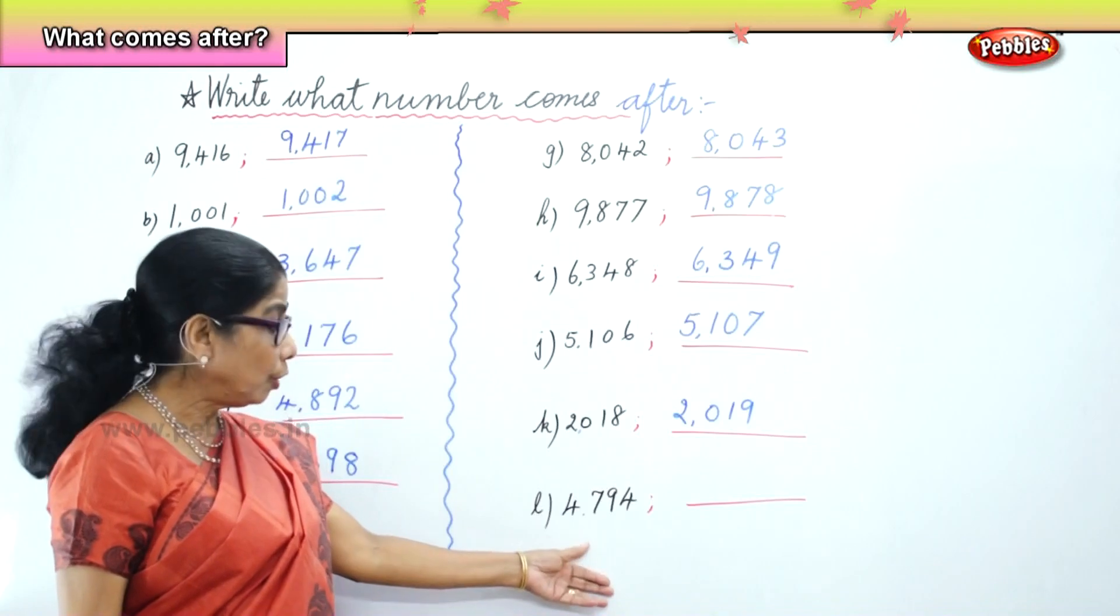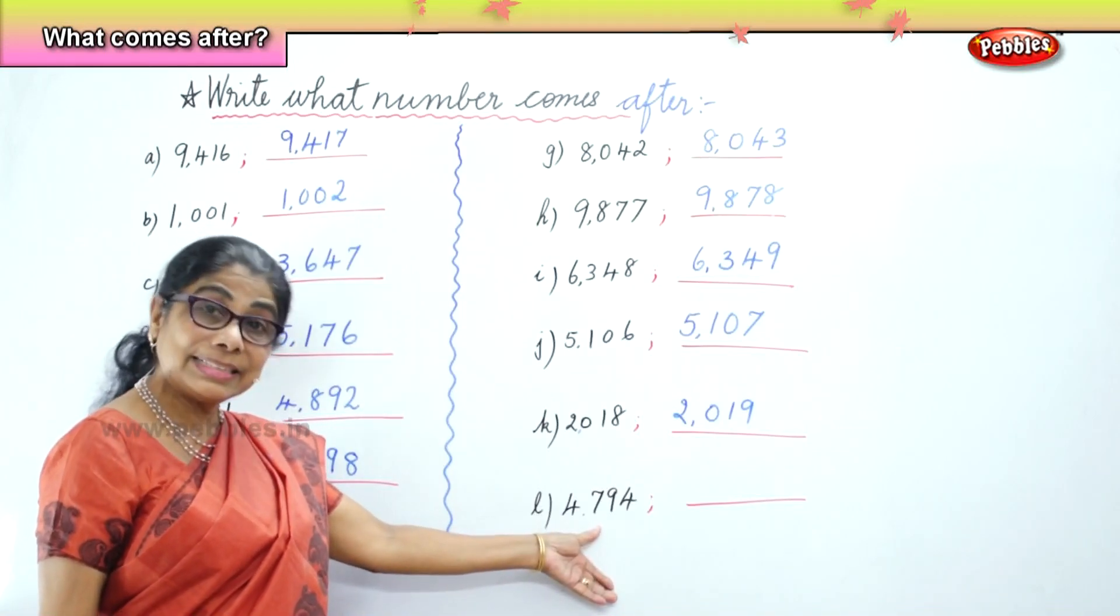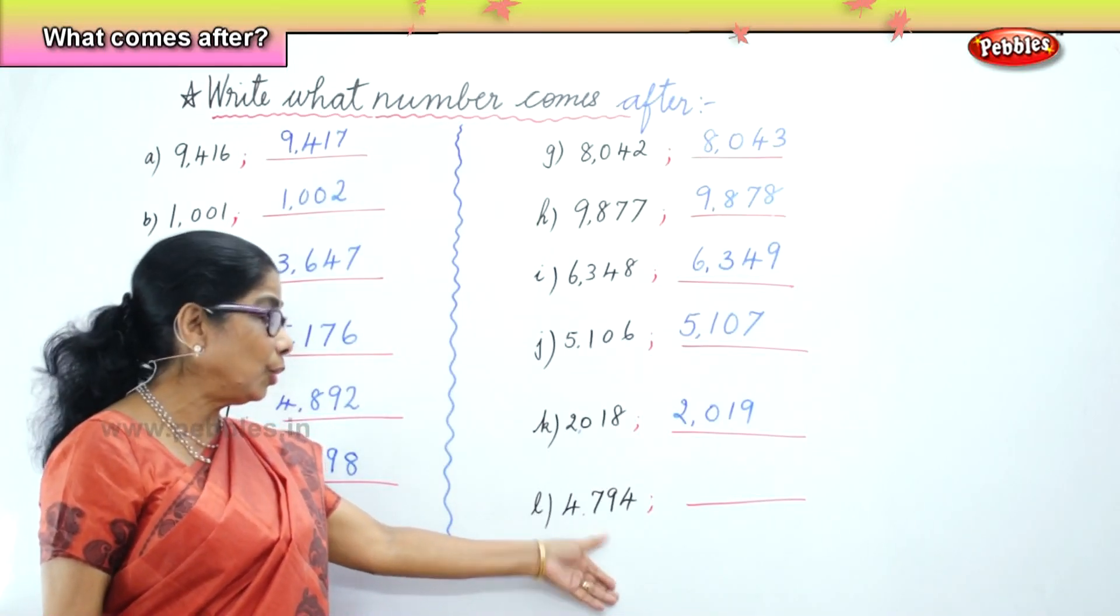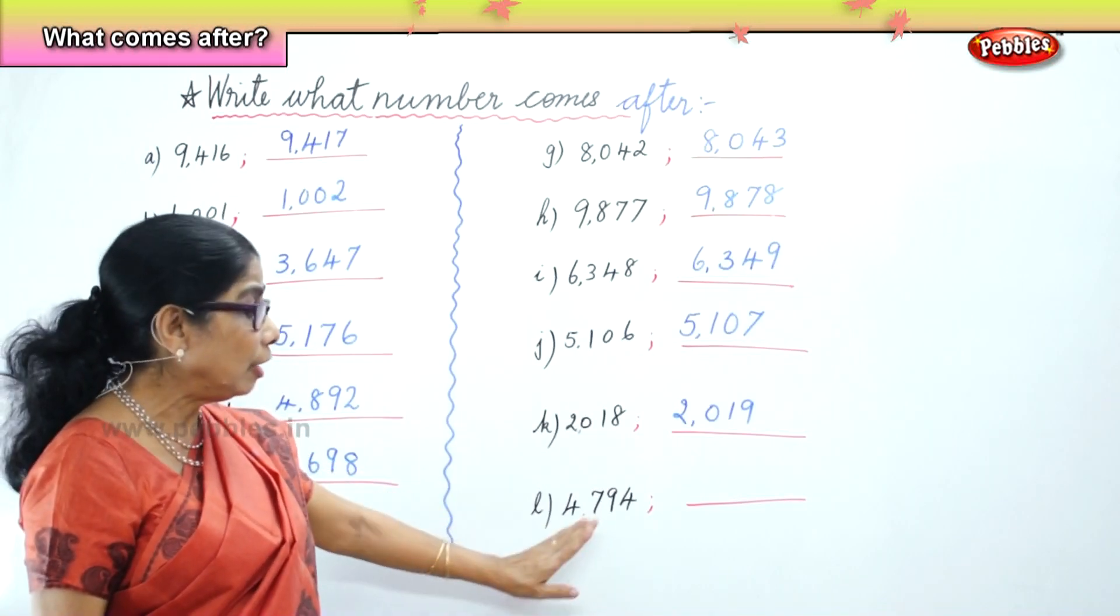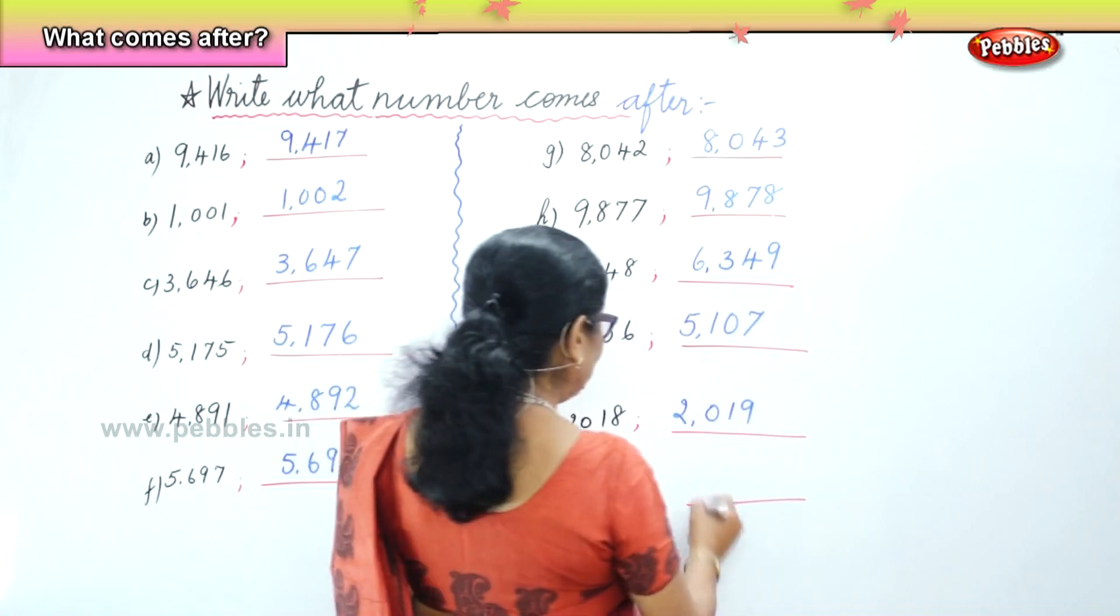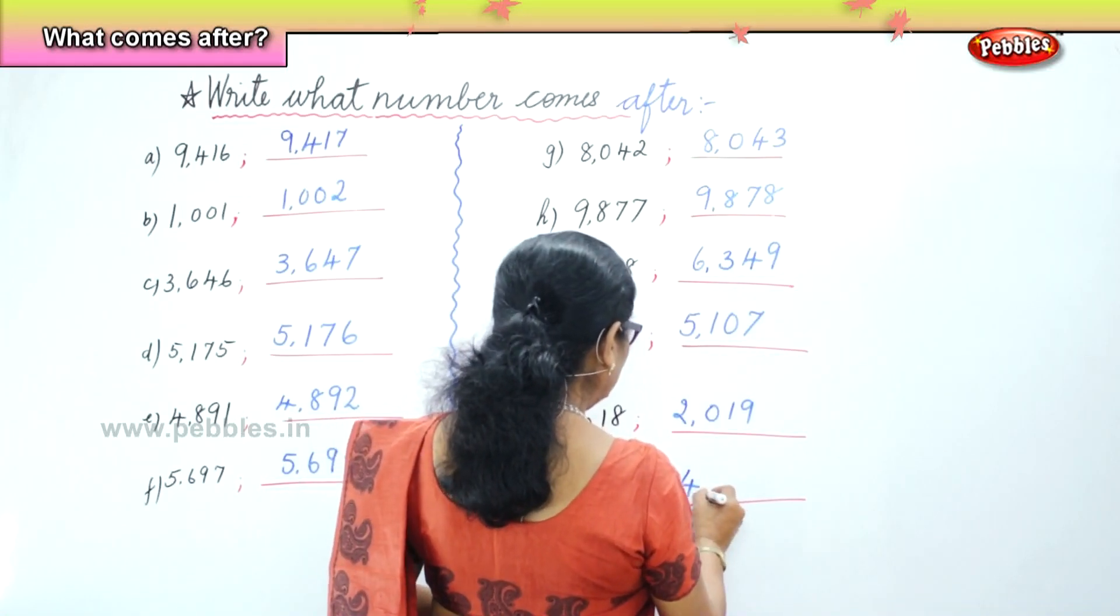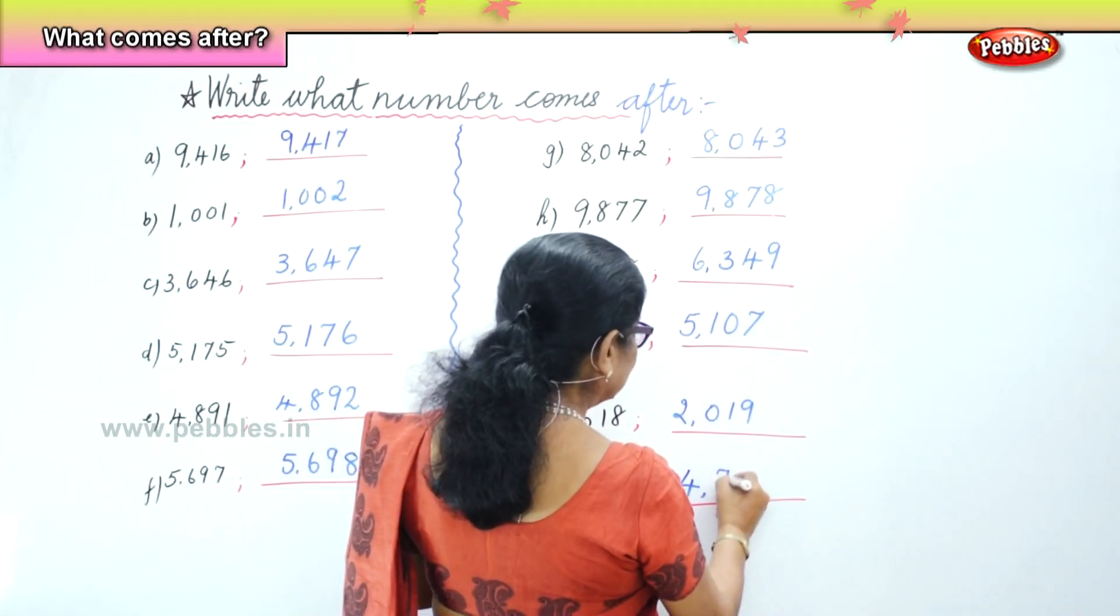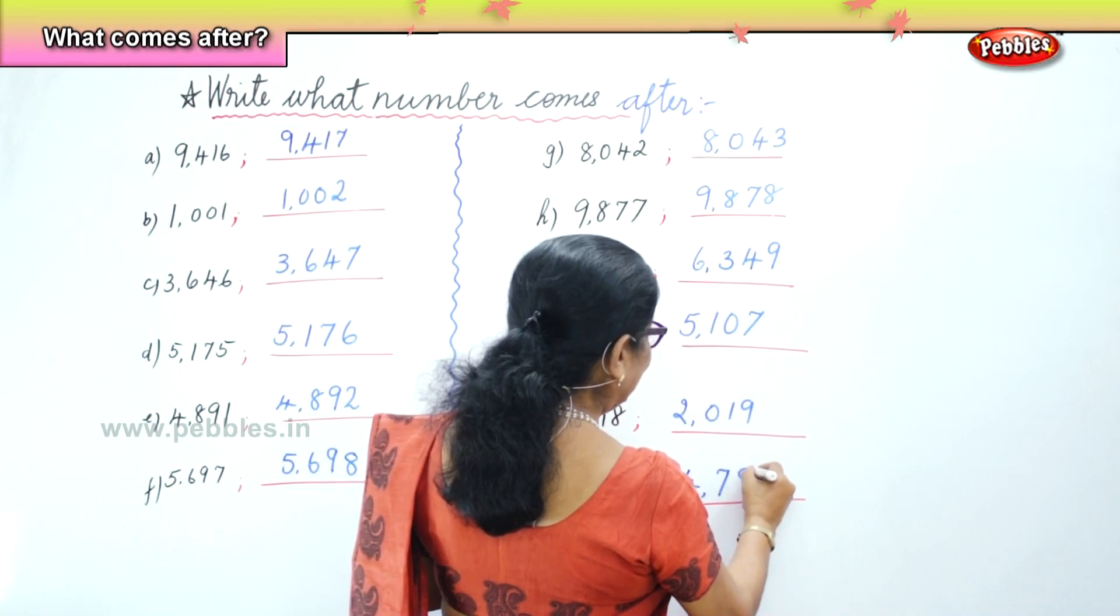Now, next. 4,794. What's the number that comes after that? 4,794, 4,795. So you get the last number 4,795.